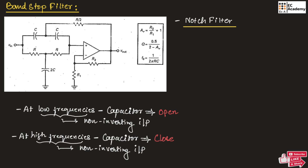So, in a band stop filter, when we apply an input signal, for low frequencies the capacitor will act as open circuit — hence all the low frequencies will appear across the non-inverting input. And for high frequencies, the capacitor will act as short circuit — hence all the high frequencies will reach the non-inverting input.